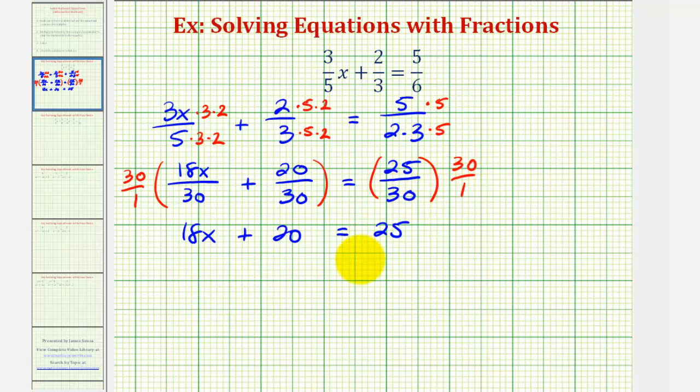And now to find our solution, we'll solve for x. So we'll subtract 20 on both sides. So we have 18x equals 25 minus 20 is 5. Divide both sides by 18. And we have x equals 5 over 18.